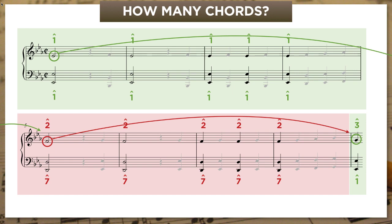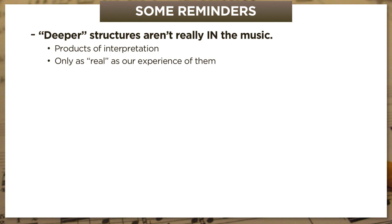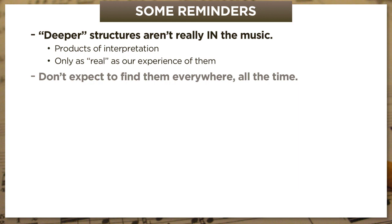You might want to ask yourself whether this analysis might just be teasing out something you kind of already noticed but maybe hadn't quite put your finger on yet. So before we look at another example, I'm going to make a few quick points. First, these deeper musical structures aren't really in the music — their existence can't be proved or disproved. They are products of interpretation, which means they're only as real as our experience of them. Though of course we can try to share our experiences with others by inviting them to hear things as we do. The second point is that we shouldn't expect to find these kinds of deeper structures everywhere all the time — but I'm always keeping my ears open for these long-range connections and processes. They turn up more often than you think, and I think it's certainly a good habit to have.